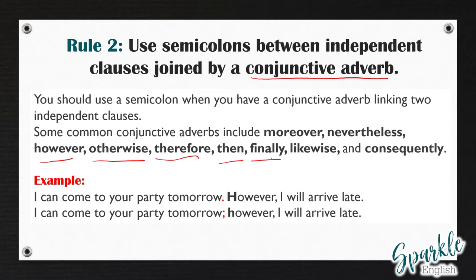Let's look at an example. 'I can come to your party tomorrow. However, I will arrive late.' Because these two independent clauses are closely related, we can join them using a semicolon: 'I can come to your party tomorrow; however, I will arrive late.' You cannot just put a comma here — you can't write 'I can come to your party tomorrow, however, I will arrive late.' You have to put a semicolon. You can either split this into two different sentences, or use a semicolon to connect the two independent clauses.